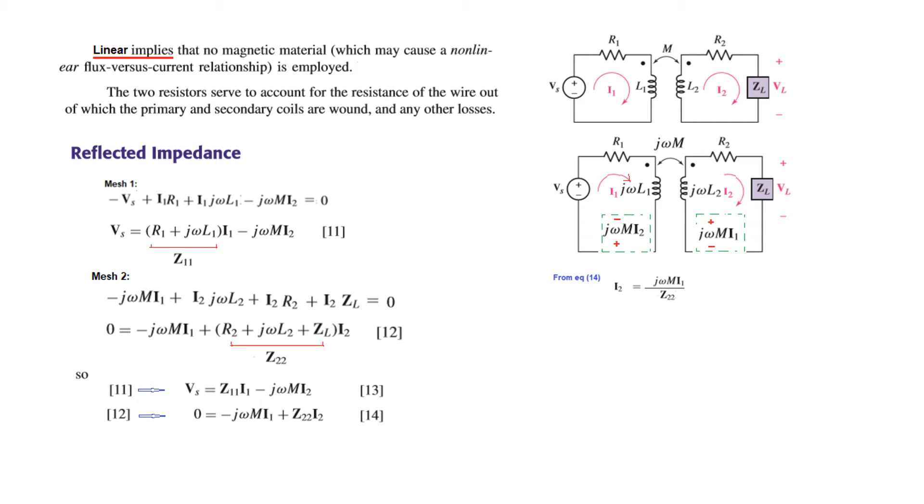From equation 14 we can find the value of I2. So I2 will be j omega m I1 over Z22. Now we put the value of I2 into equation 13.